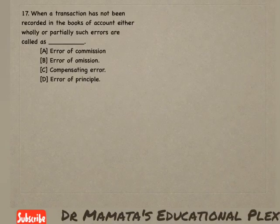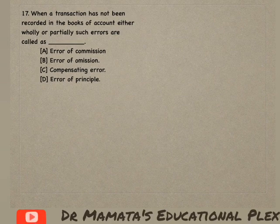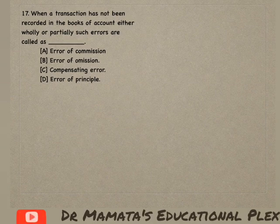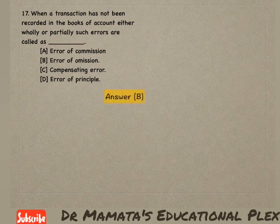Next: When a transaction has not been recorded in the books of accounts, either wholly or partially, such errors are called — error of commission, error of omission, compensating error, or error of principle? Jab accounts mein transaction record hi nahi hua hota, either fully ya partially, toh is tarah ka error error of omission kehlata hai. Error of omission mein koi entry forgot hoti hai ya entry record hi nahi ki jaati. So option B is the correct answer.